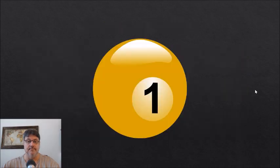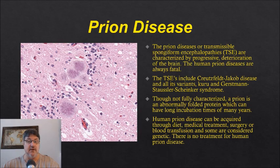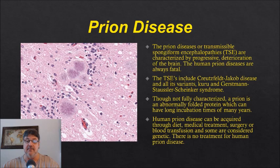Number one: prion disease. The prion diseases, or transmissible spongiform encephalopathies (TSEs), are characterized by progressive deterioration of the brain. Human prion diseases are always fatal. The TSEs include Creutzfeldt-Jakob disease and all its variants, Kuru, and Gerstmann-Sträussler-Scheinker disease. Though not fully characterized, a prion is an abnormally folded protein which can have long incubation times of many years. Human prion disease can be acquired through diet, medical treatment, surgery, or blood transfusion, and some are considered genetic. There is no treatment for human prion disease.